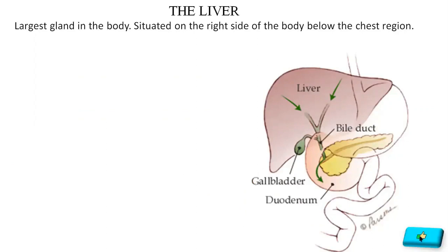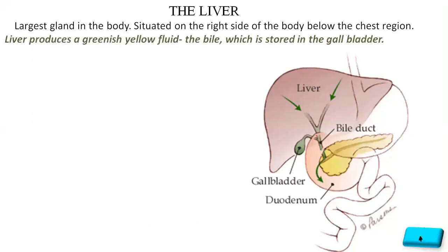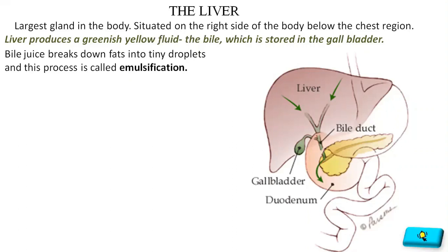Before learning the whole process of digestion in the small intestine, let us learn about two digestive glands: the liver and pancreas. The liver is reddish-brown in color and is the largest gland in the body, situated on the right side of the body below the chest region. The liver produces a greenish-yellow fluid called bile, which is stored in the gallbladder — an organ found just below the liver. Bile does not contain any enzyme, but it is essential for digestion as it breaks fats into smaller droplets through a process known as emulsification, so that enzymes can act on them efficiently.